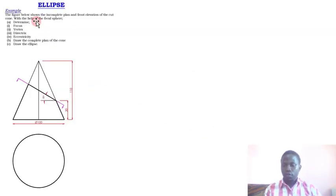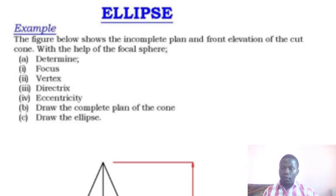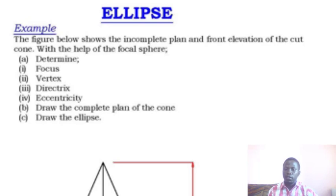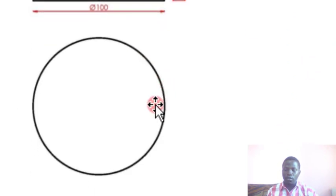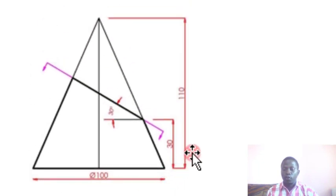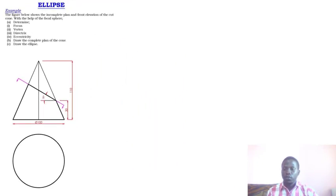Now we are going to look at the ellipse. The example says: the figure below shows the complete plan and front elevation of a cut cone. With the help of the focal sphere, determine — part one — the focus, vertex, directrix, and eccentricity. Part b: draw the complete plan of the cone. Part c: draw the ellipse itself. The base diameter is 100, the height of the cone is 110, and the sectioning line is inclined at 30 degrees.